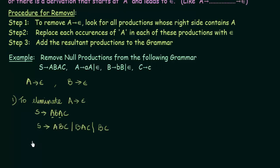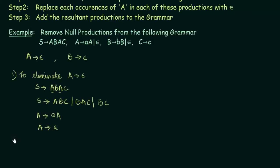The next production containing A on the right side is A gives AA. If we replace one of those A's with epsilon, we get A gives just small a.